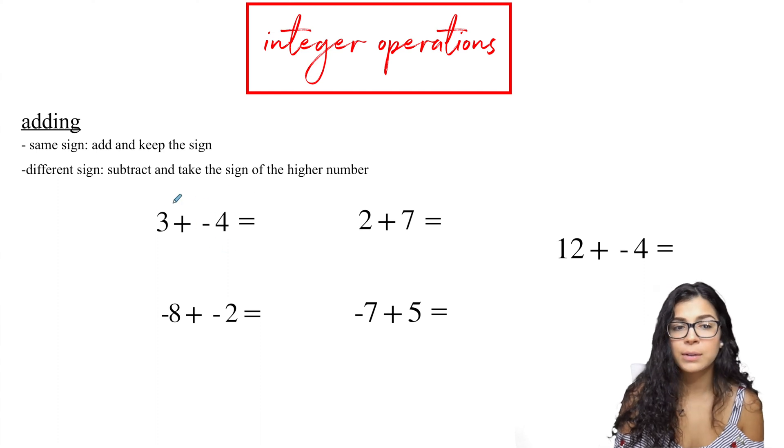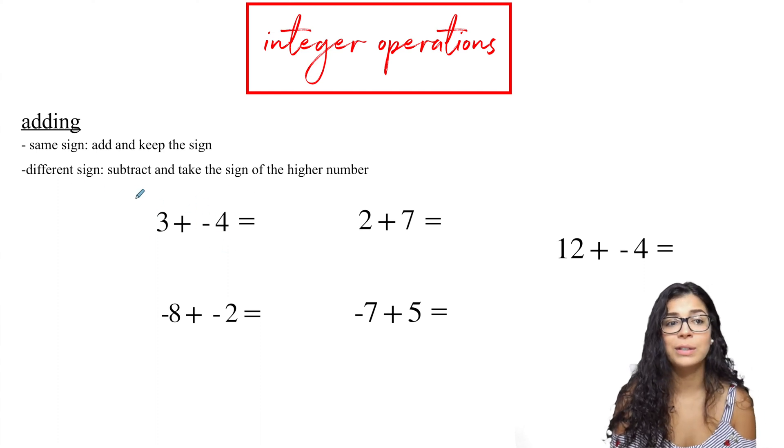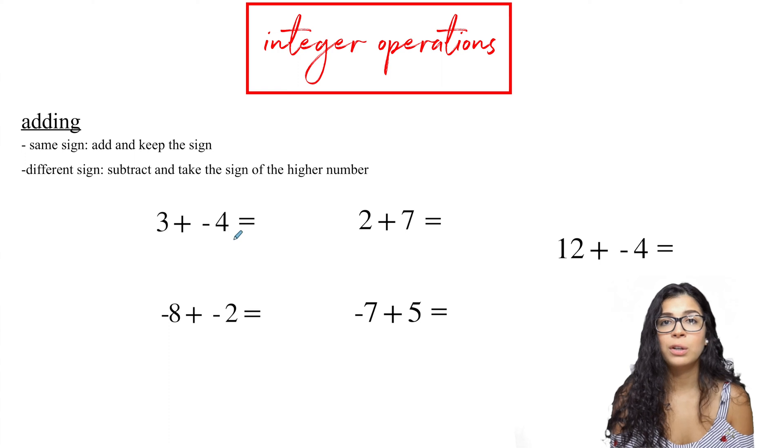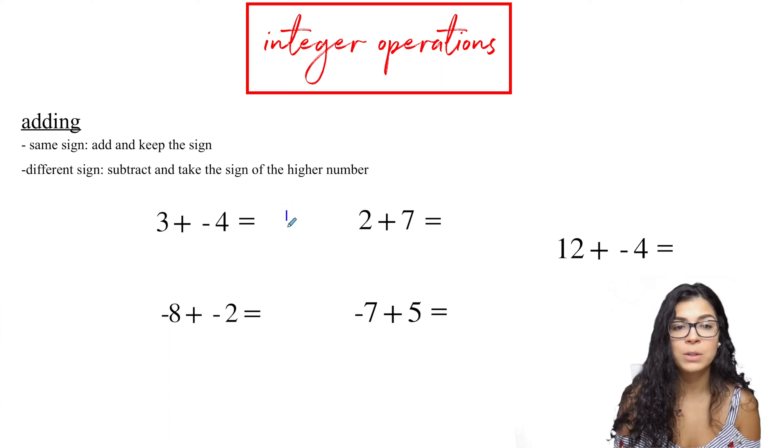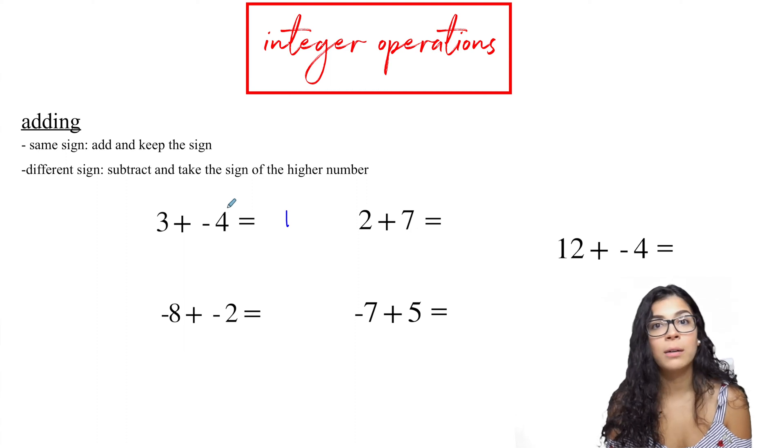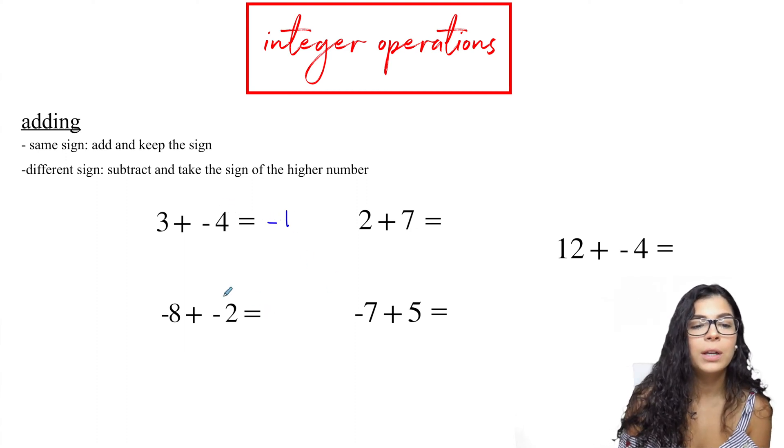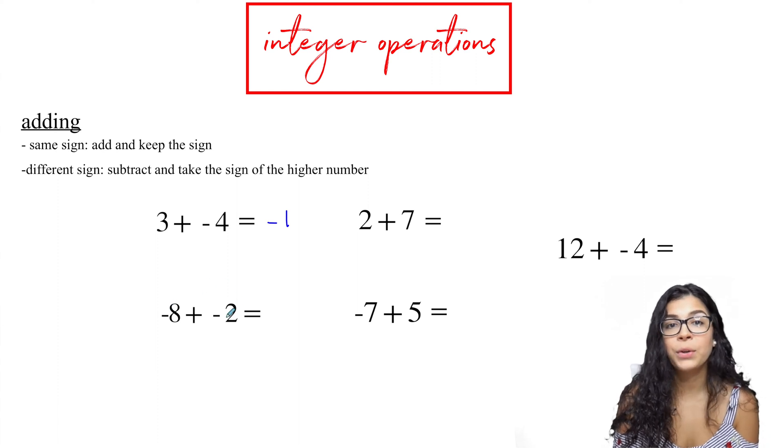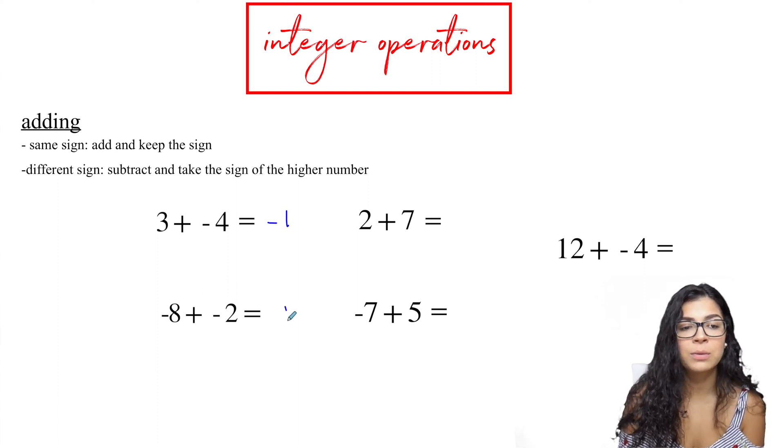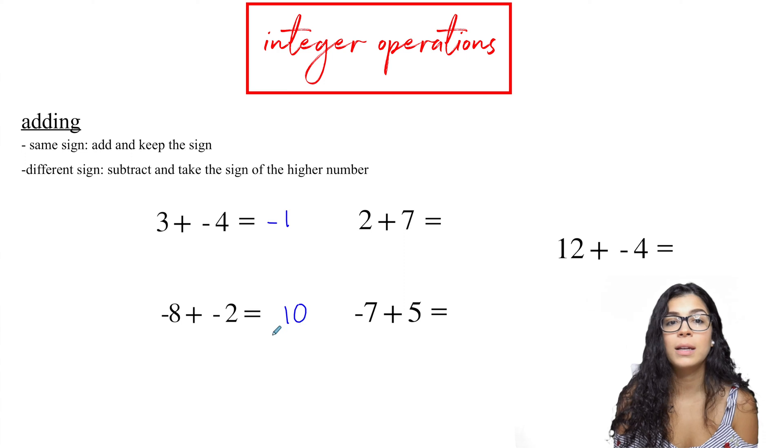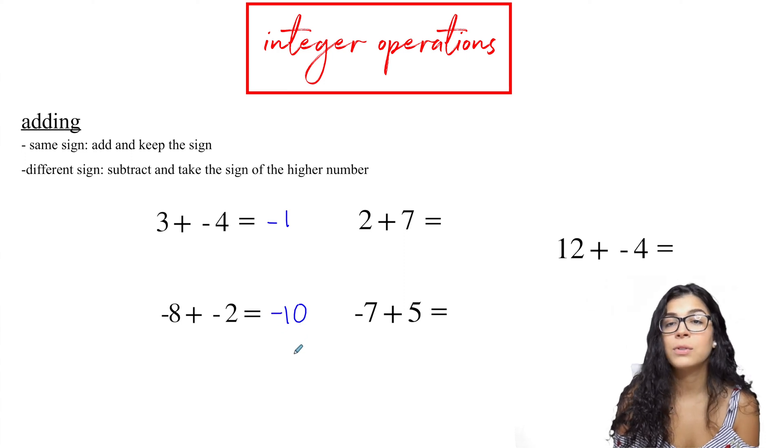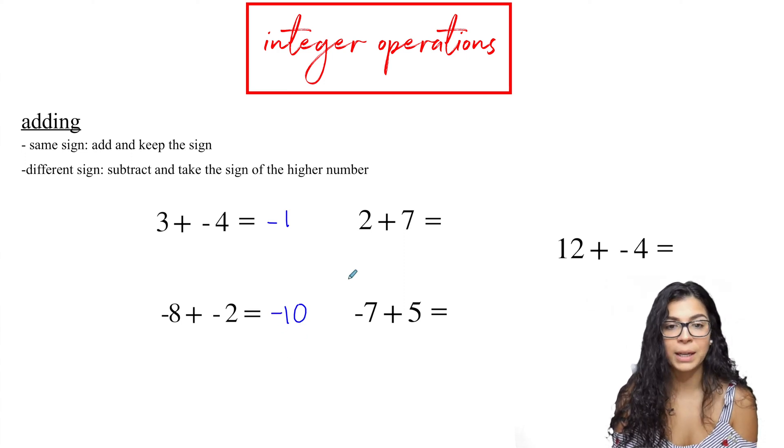Alright, we got the first example here. Notice how this is positive and a negative, so these are different signs. So I'm going to take the difference, four and three. That's one. And then my bigger number, three or four. Four is bigger, so the sign will be negative. Over here we have same sign. Both are negative, so I'm going to add them. Eight plus two is ten. And I'm going to take the sign, both are negative, so the result will be negative.